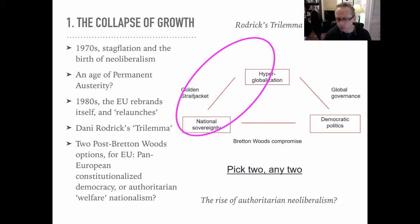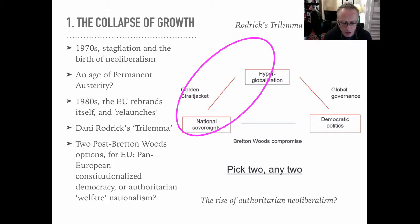Who is Dani Rodrik? He is a scholar of development studies. He argues — and you can see here on the diagram on the screen — that you can have three pillars of any development strategy oriented as a response to globalization: national sovereignty, economic globalization, and democracy. You can have two of them in play at any one time, but not all three.